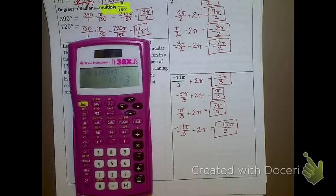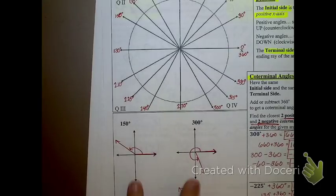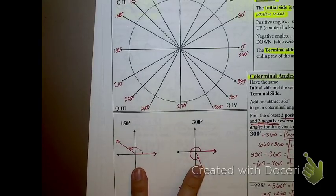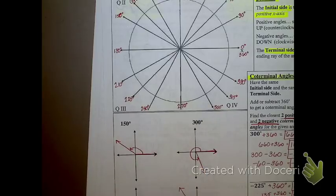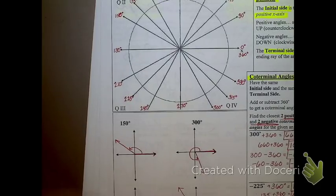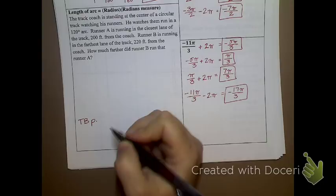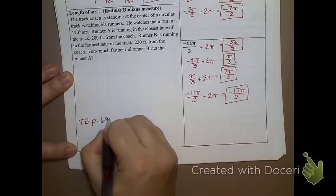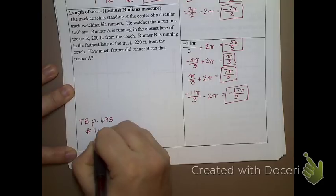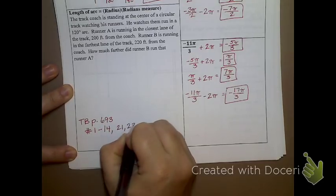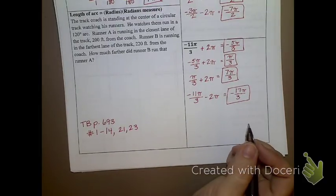Things you need to know how to do: change radians to degrees, change degrees to radians, find coterminal angles in both degrees and radians, and draw angles. Most angles will be given in degrees, but if given in radians, you need to be able to draw the angle as well. Your homework is on page 693, numbers 1 through 14, as well as 21 and 23. I will post this on Google Classroom.